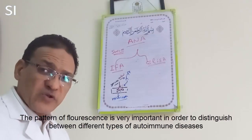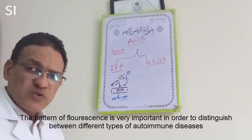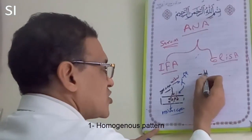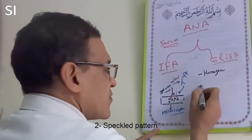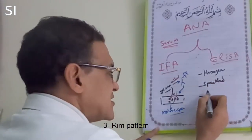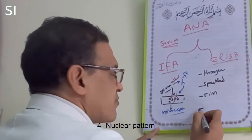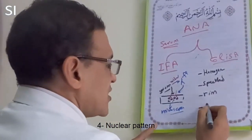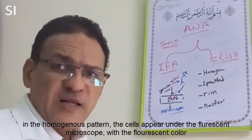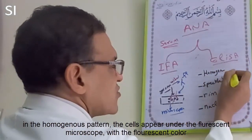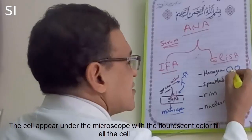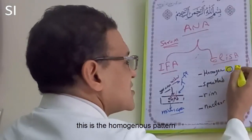The pattern of fluorescence is very important in order to distinguish between different types of autoimmune diseases. There are four types of patterns: number one is the homogenous pattern, number two is the speckled pattern, number three is the rim pattern, and number four is the nuclear pattern. In the homogenous pattern, the cell appears under the fluorescence microscope with the fluorescent color filling the entire cell.